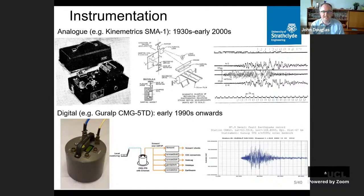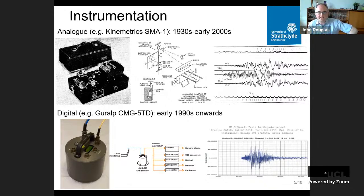In the early 1990s, basically all strong motion data became recorded on digital instruments, recording directly in digital format onto a hard drive or via the internet. This means those previous processing steps are no longer needed, significantly reducing the amount of noise and the time taken.